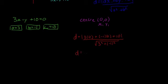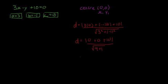So d is equal to 0 plus 0 plus 10, all divided by the square root of 9 plus 1. So that means d equals the modulus of 10 divided by the square root of 10. That's going to be 10 over the square root of 10, and if you pop that into your calculator, you'll find out that d is just equal to root 10.